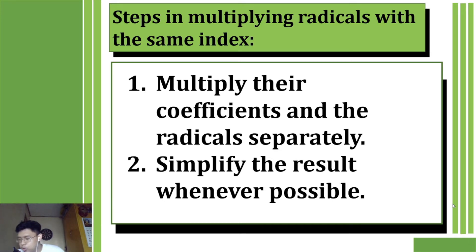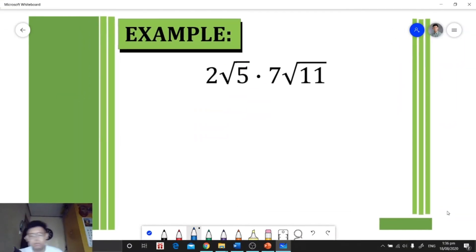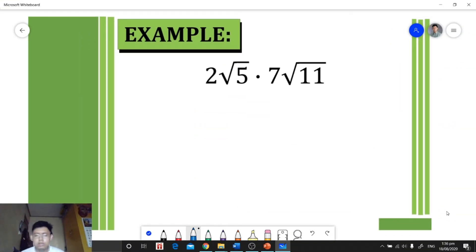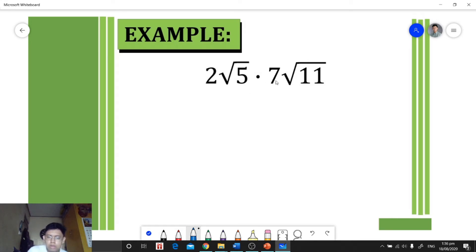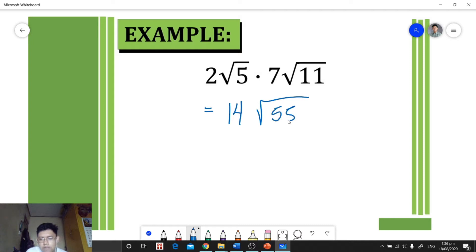For our first example, we multiply two radicals. We multiply coefficient by coefficient and radical by radical. So two times seven equals 14, and the square root of five times the square root of eleven gives us the square root of 55. Our final answer is 14√55.